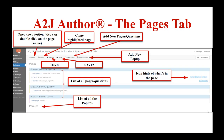The fourth tab down is the Pages tab. This is where you're going to spend the majority of your time authoring. You can edit existing pages and add new ones here. For A to J Author, the term page and question are often used interchangeably. You can open, clone, and delete pages and add pop-ups as well in the top navigation bar. The list of pages shown are sorted by steps, with the title, a snippet of the text, and icons showing what type of fields or help are included. Steps only appear when they have questions inside them, and the list of pop-ups created are at the bottom of the pages list.